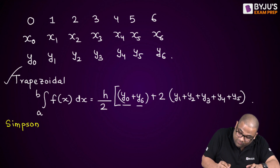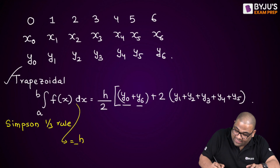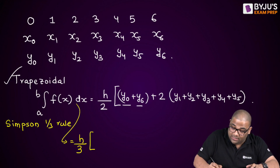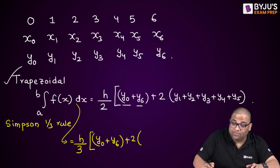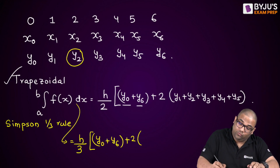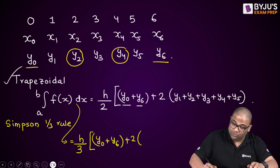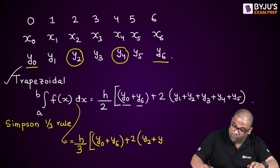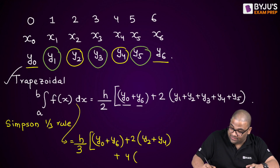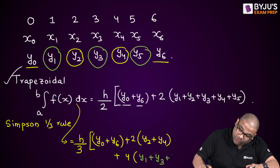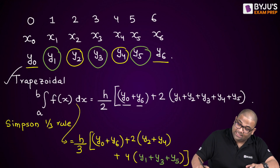For Simpson's one-third rule, the integration equals h/3 × [y₀ + y₆ + 2(y₂ + y₄) + 4(y₁ + y₃ + y₅)]. The first and last terms are still y₀ and y₆. Two times the even-indexed terms: y₂ and y₄. Four times the odd-indexed terms: y₁, y₃, and y₅. It's very easy once you know the values.